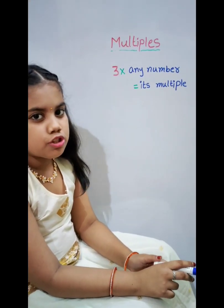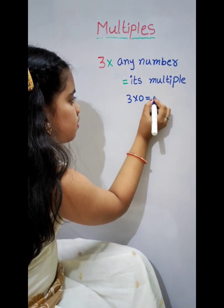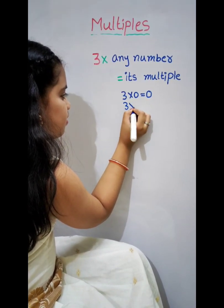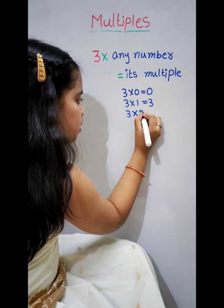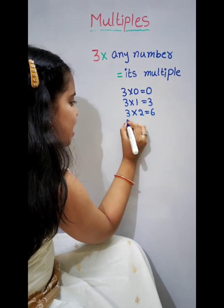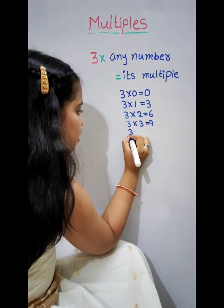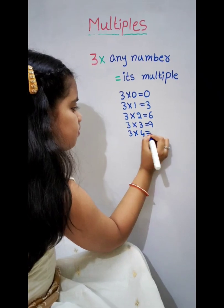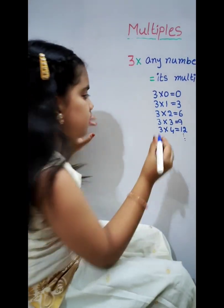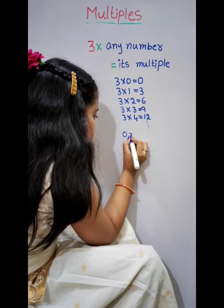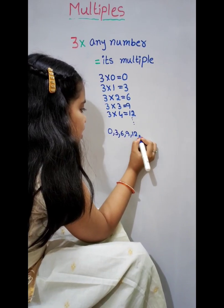Next example: multiples of 3. 3 0's are 0. 3 1's are 3. 3 2's are 6. 3 3's are 9. 3 4's are 12, and so on. The multiples of 3 are 0, 3, 6, 9, 12, and so on.